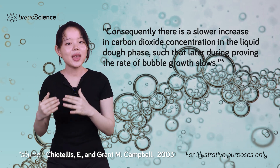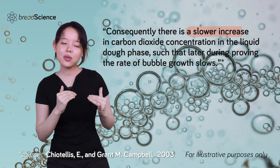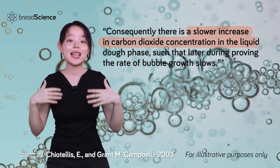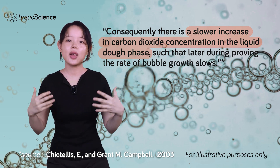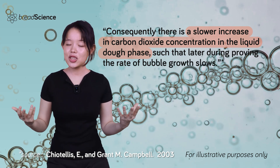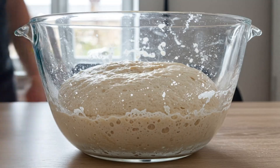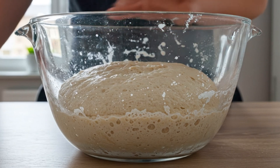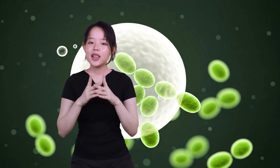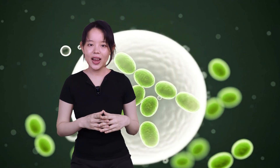The initial size and number of bubbles created during mixing also play a role. A greater number of bubbles means a larger total surface area for mass transfer, which can initially lead to more rapid transfer of gas into the bubbles. However, this can also mean a slower increase in carbon dioxide concentration in the liquid phase, potentially slowing the growth rate later in bulk fermentation and proofing. But bubble growth isn't the only thing happening during fermentation — the bubble population is constantly changing shape and size distribution due to complex physical phenomena.